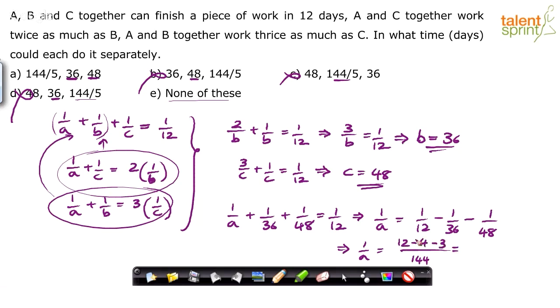So 12 - 4 - 3 is 5, 5/144. Remember 1/A is 5/144. So A will be what? 144/5. Option A.